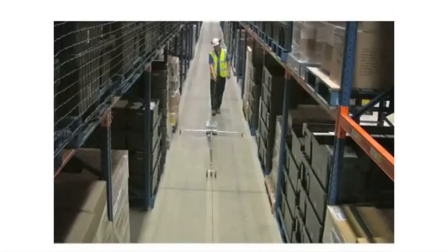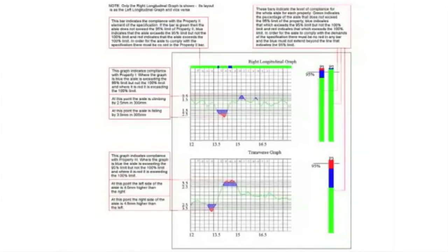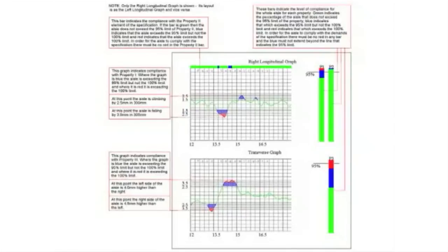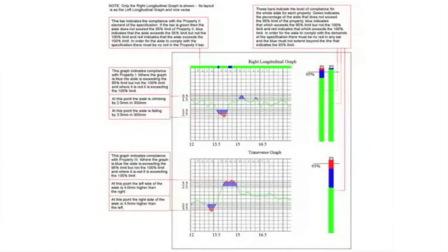You can do this under construction or when the facility is already in service. What the profilograph gives you is this kind of readout. From this readout you can interpret — here we've limited it to showing the right longitudinal graph (what's happening with the right-hand wheel) and the transverse graph. The software gives you a visual impression of what the truck is actually experiencing, and can also give you a guide as to what grinding may be necessary to bring the floor back into the required tolerances.